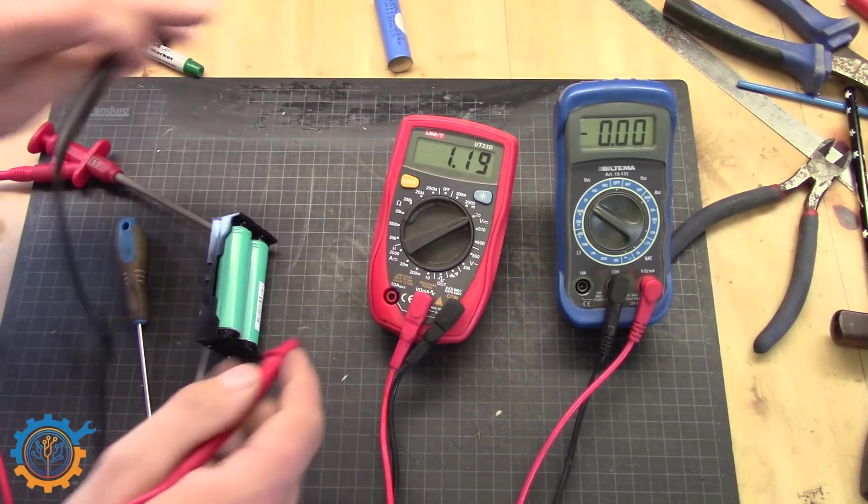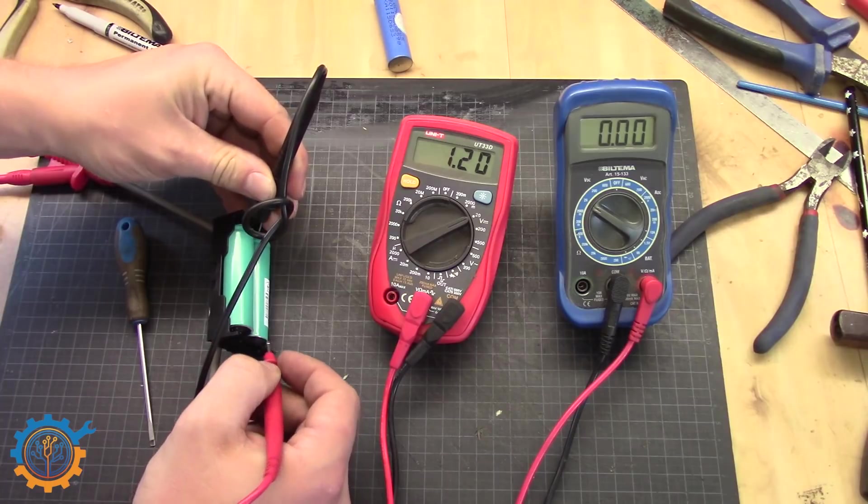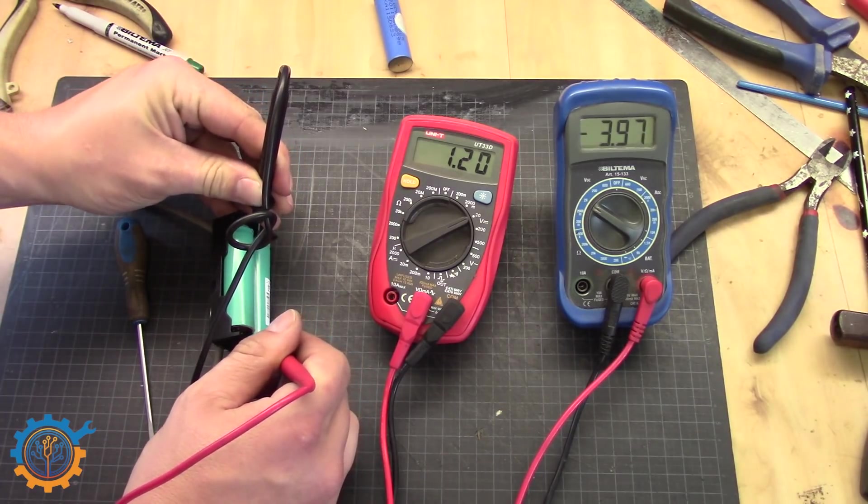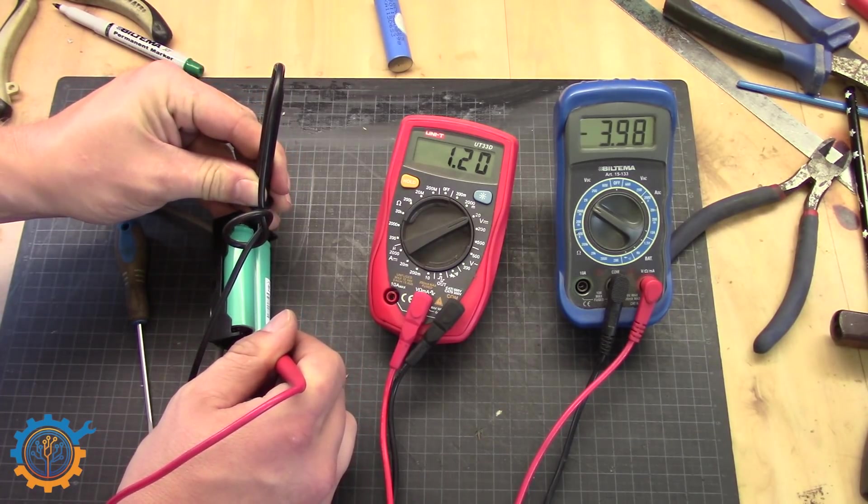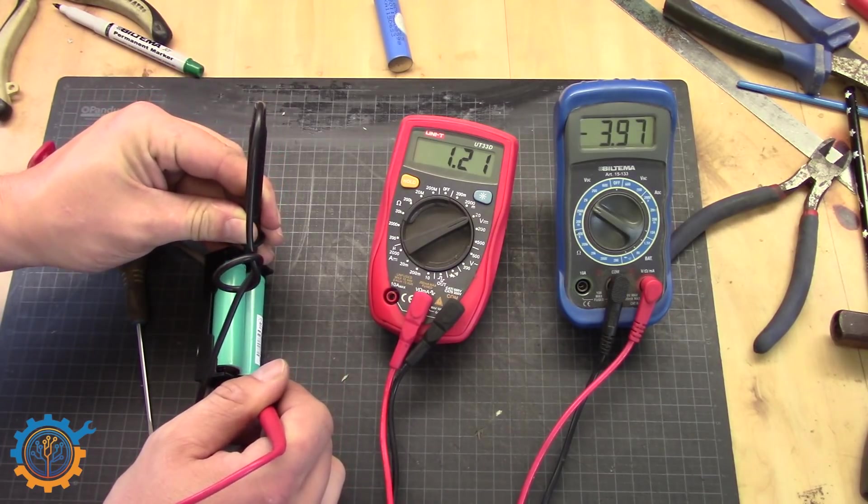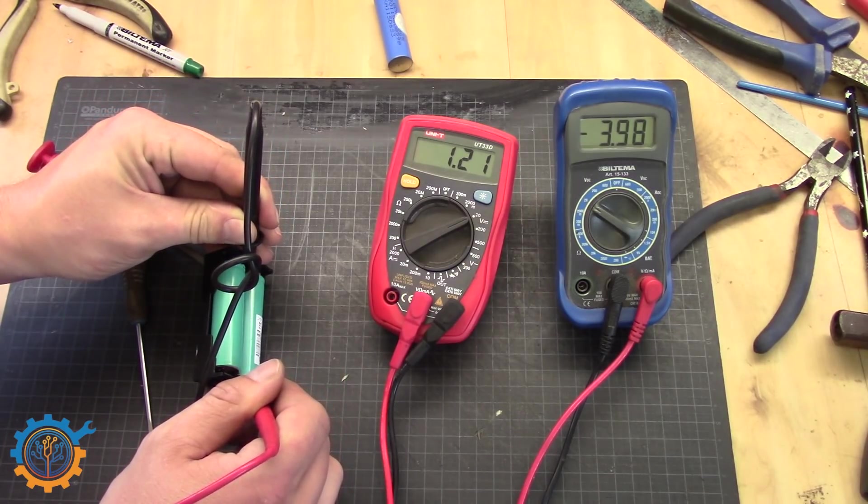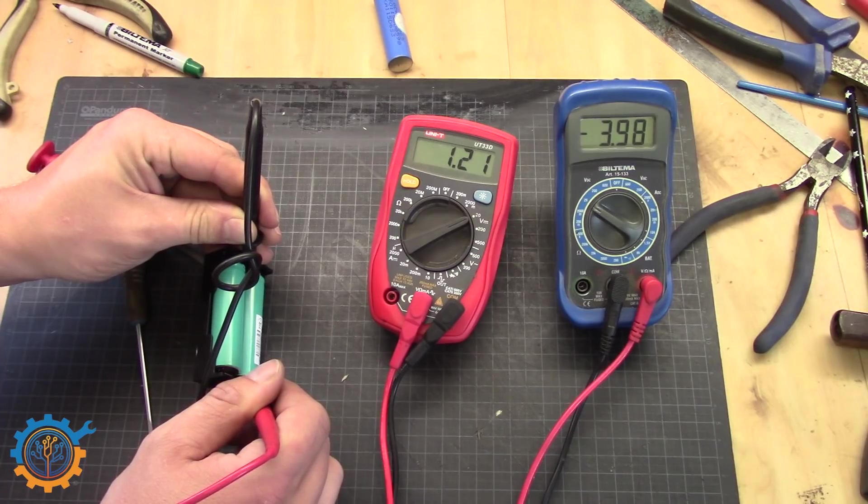And what will happen now. You will see that the right one is still 4 volt. And the left one will slowly be climbing up. As you can see. On the voltmeter.